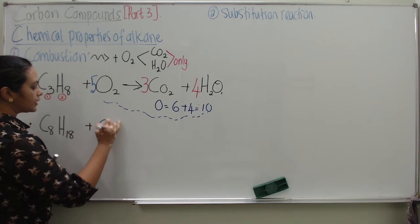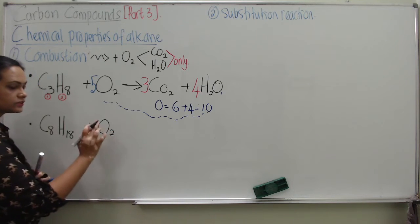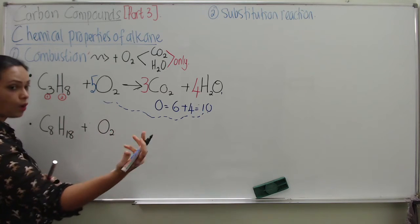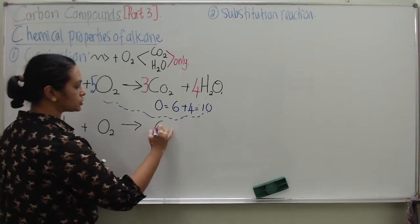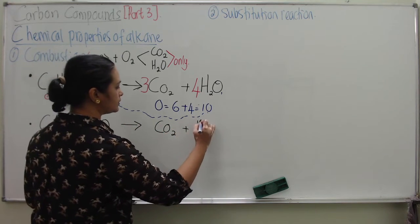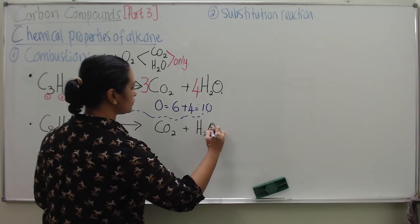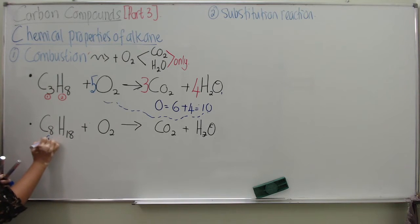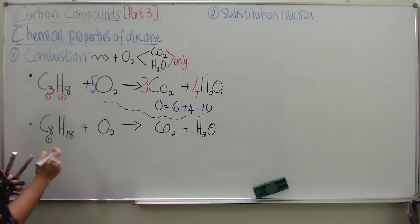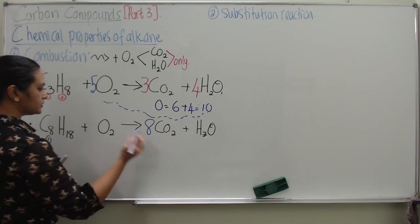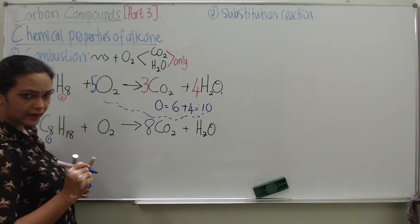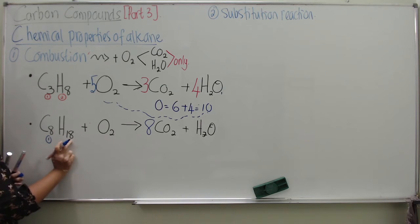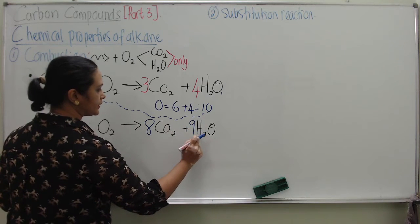Octane is reacting with oxygen — this is combustion. When you see oxygen, it means it's going through combustion. This is complete combustion, so automatically I write carbon dioxide and water as products. Now let's balance this together. First rule: balance your carbon — add an 8 in front of CO2. Second: balance your hydrogen — H count is 18, so put 9 in front of H2O, because 9 times 2 is 18.